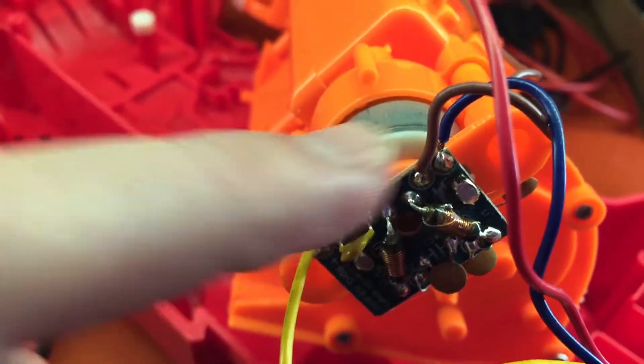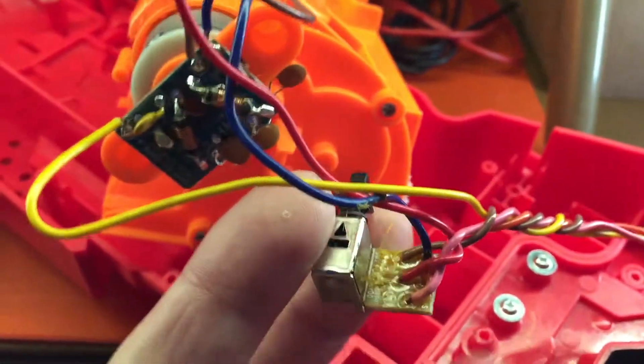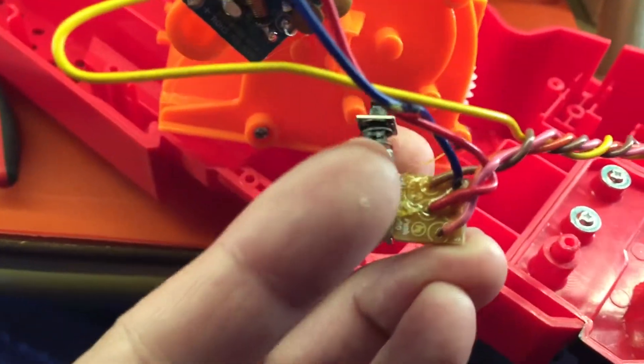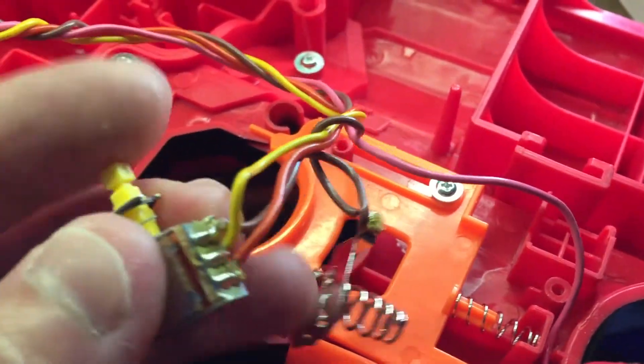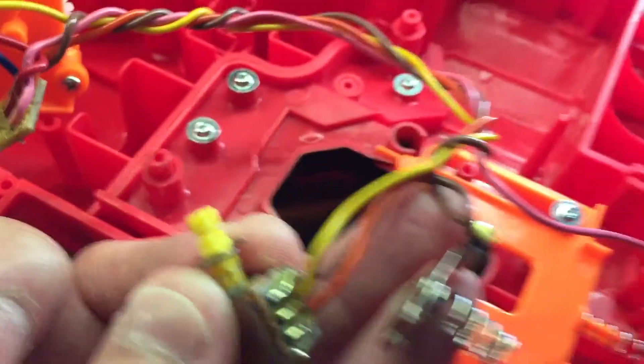The brown goes into the negative of the feeder motor. This blue here is just to have that jam door switch spliced in there, and the blue goes back into brown.